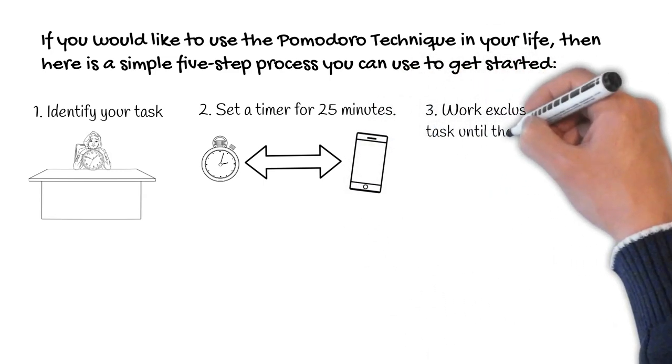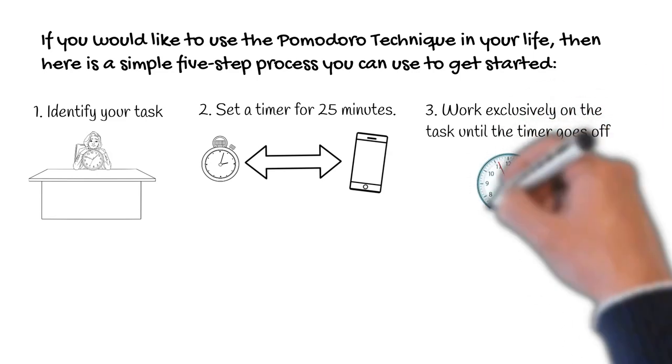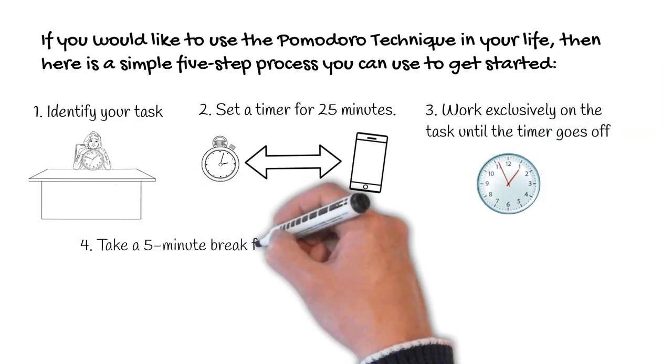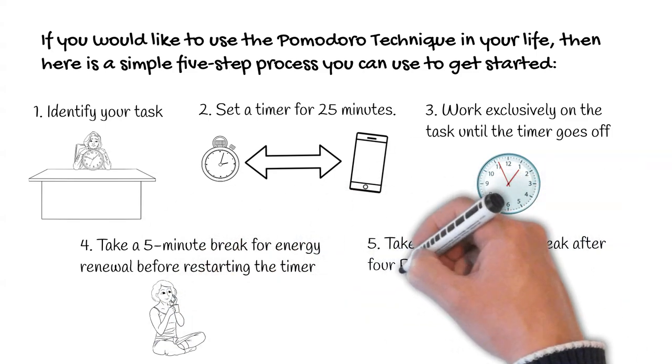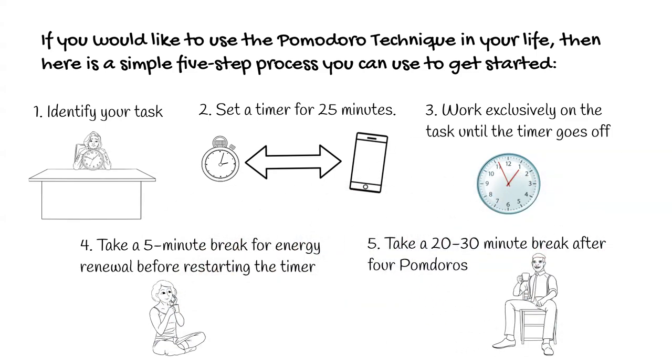Work exclusively on the task until the timer goes off. Take a five-minute break for energy renewal before restarting the timer. Take a 20 to 30-minute break after four Pomodoros. Sounds simple, right?